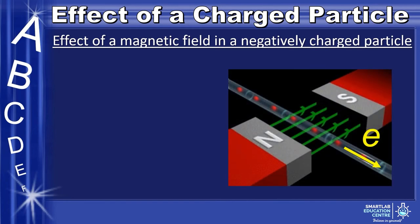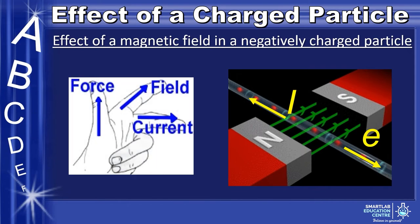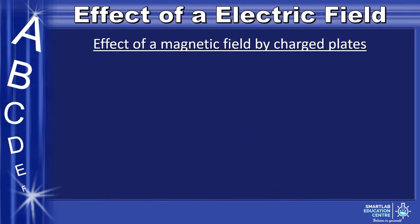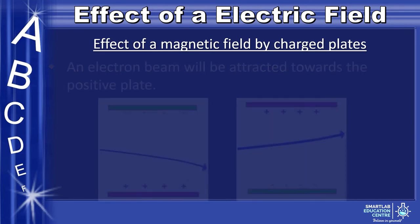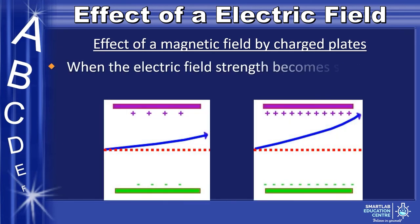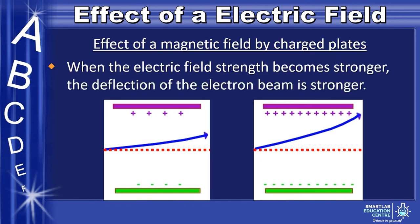In the case of the flow of electrons, the conventional current will be opposite to the flow of electrons. By Fleming's left-hand rule, the electrons experience a force downward. Now, let us look closely at how particles behave when they enter between a set of oppositely charged parallel plates. For an electron beam, the beam will curve and deflect towards the more positive plate. As we increase the field strength of the plates, the angle of deflection of the electron beam will be stronger.